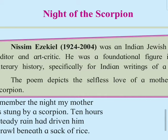The poem is a first-person account of how a son — that means the poet — watches helplessly as his mother suffers from the scorpion's sting. None of the villagers' blessings and curses, a holy man's charms, or the rational husband's experiments bring relief to the poet's mother. It shows that the villagers' behaviour is characterised by their illiteracy and the lack of medical facilities, which thereby results in blind beliefs and superstitions.